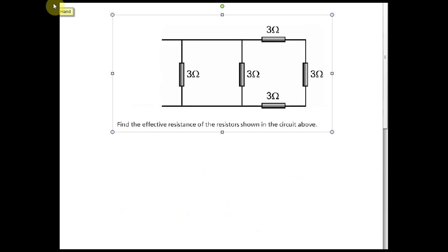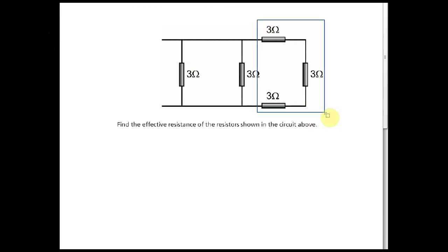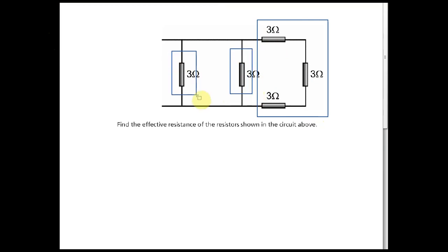For question two, we divide the circuit into three sections. There is one section here, another here, and another here — labelled section one, section two, and section three. Let's start with section three.